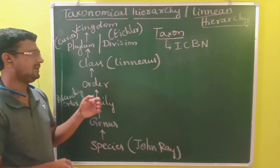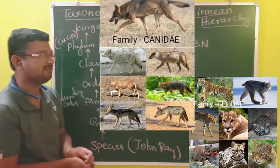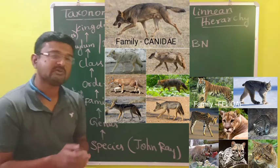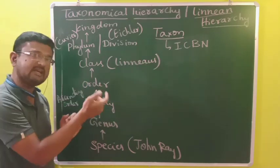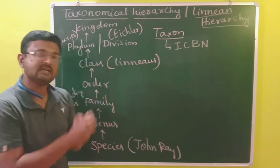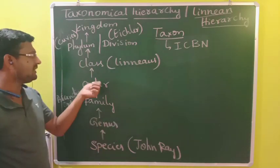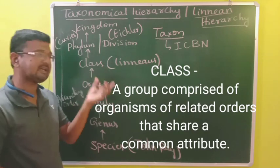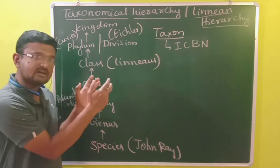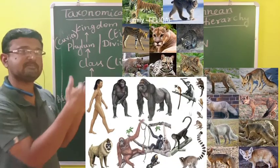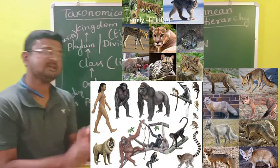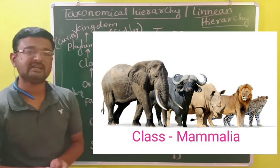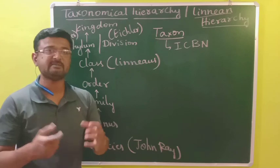At higher categories: family Felidae (cats) and family Canidae (dog family — including dog Canis familiaris, wolf, and fox) both are carnivorous, so they are kept under the order Carnivora. Related orders are grouped into a higher category called class. Carnivora and Primata (monkeys and apes) come under one common class — class Mammalia. Mammals are animals with mammary glands and hairs on their body.